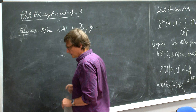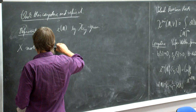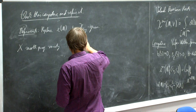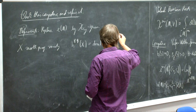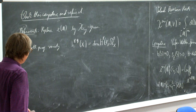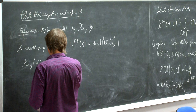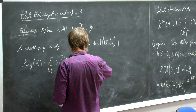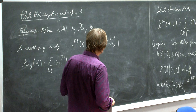So, refinement: replace the Euler number by the chi-y genus. If X is a smooth projective variety, the chi-y genus can be expressed in terms of Hodge numbers H^{p,q}(X) — the dimension of H^p of X with values in the sheaf of holomorphic q-forms. The chi-y genus of X is the sum over all p and q, with a partially alternating sum, of these Hodge numbers.